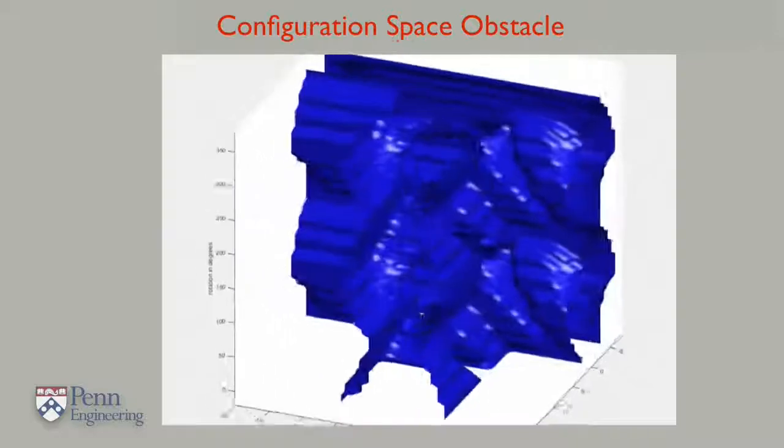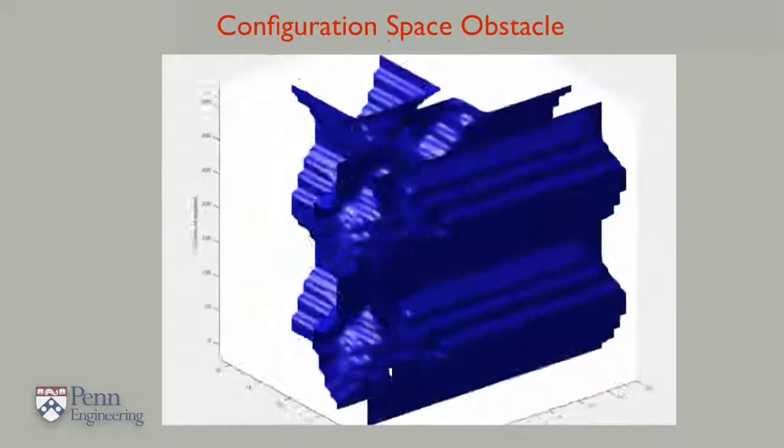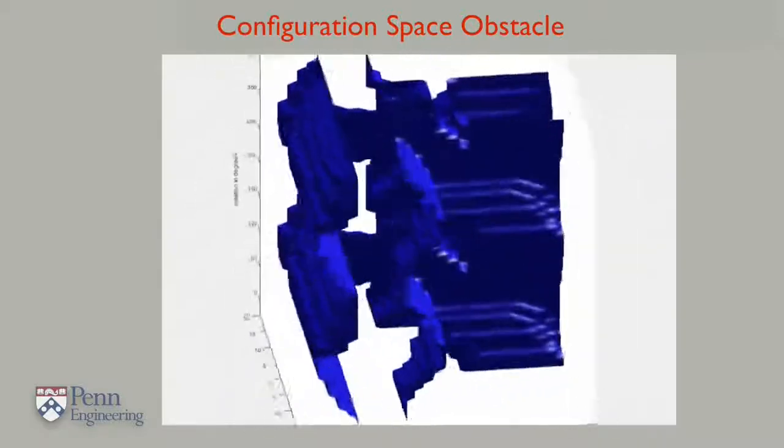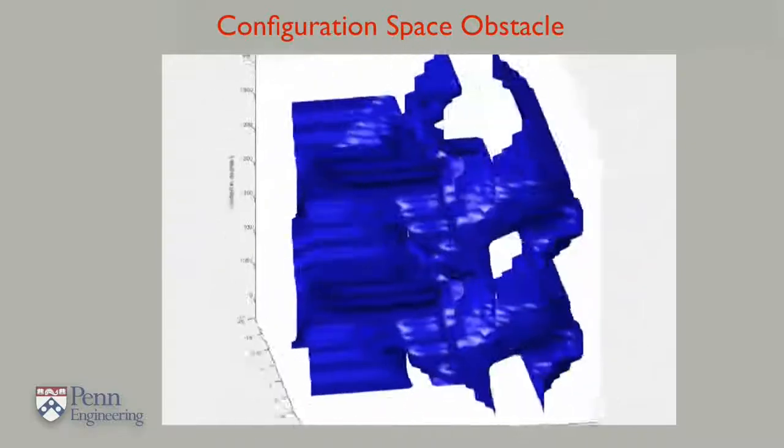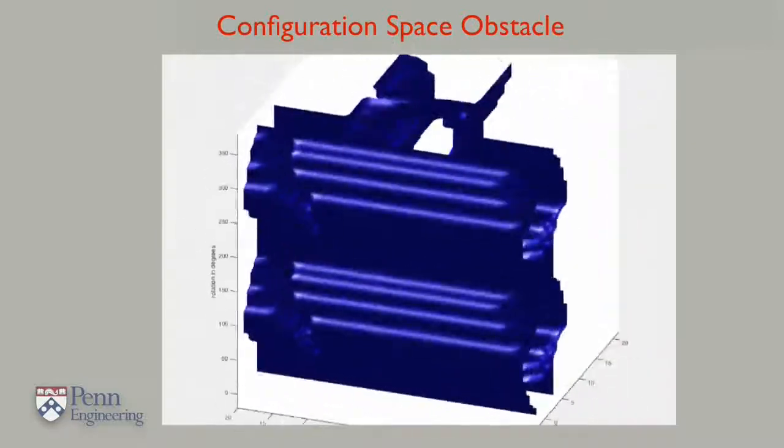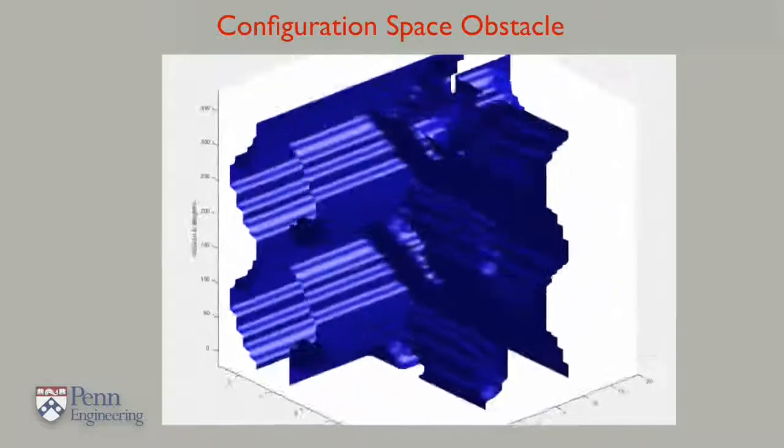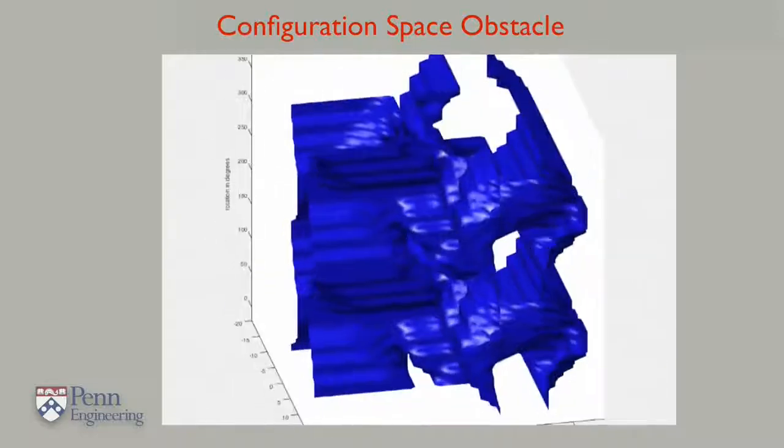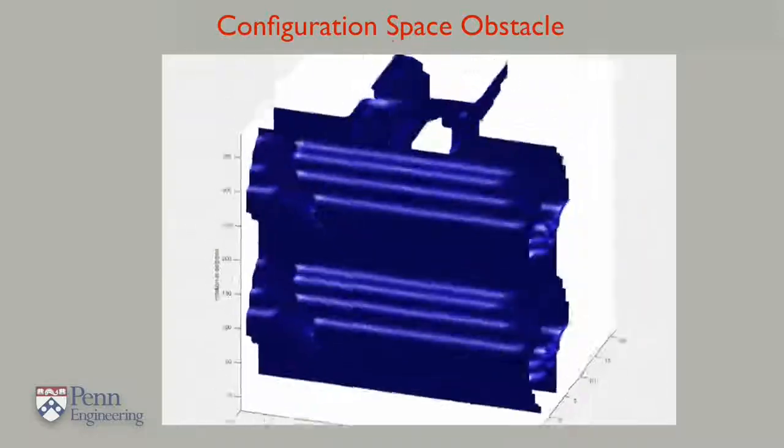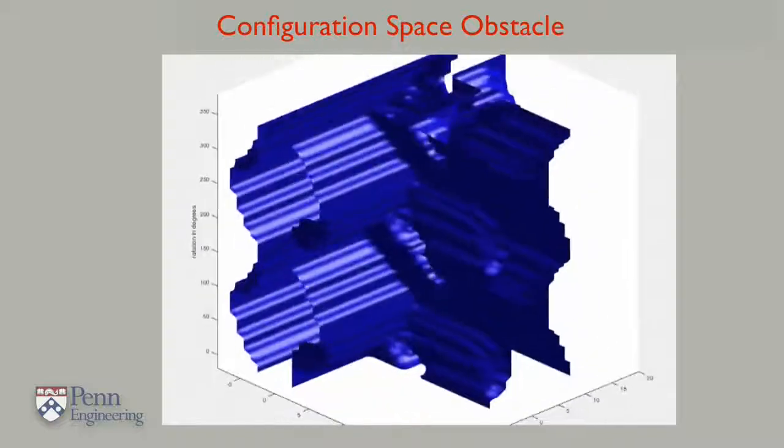This movie shows a depiction of the surface of the configuration space obstacle corresponding to the obstacles shown in the previous figure. The vertical axis corresponds to the rotation, theta, while the other two horizontal axes correspond to the translational parameters, tx and ty.